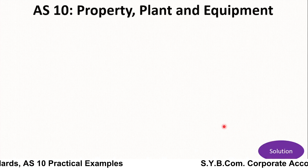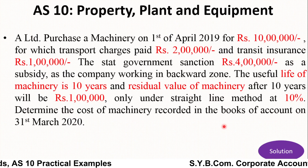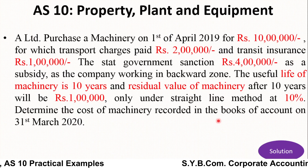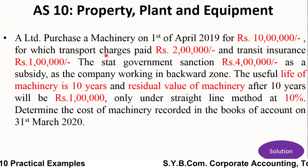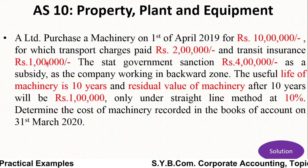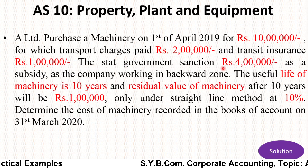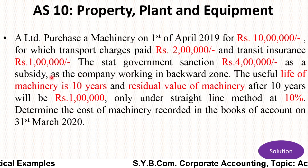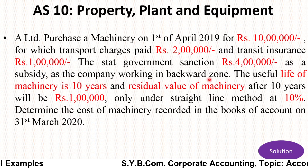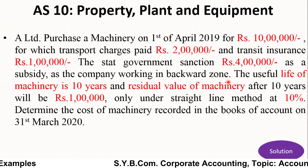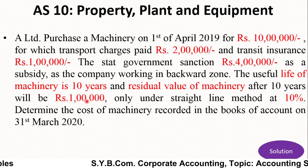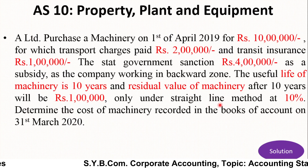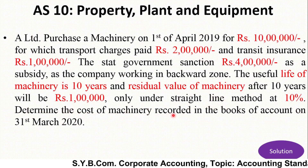Let us start our practical example. A Limited purchased machinery on 1st April 2019 for rupees 10 lakh, for which transport charges paid were rupees 2 lakh and transit insurance rupees 1 lakh. The state government sanctioned rupees 4 lakh as a subsidy as the company is working in a backward zone. The useful life of the machinery is 10 years and residual value after 10 years will be rupees 1 lakh, under straight line method at 10 percent. Determine the cost of machinery recorded in the books of accounts on 31st March 2020.